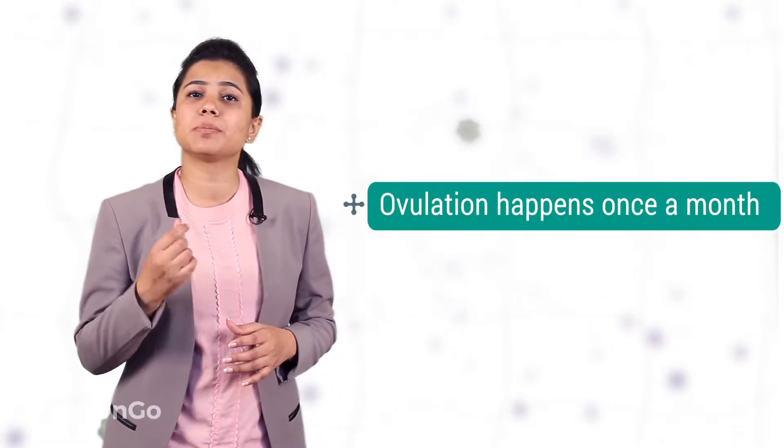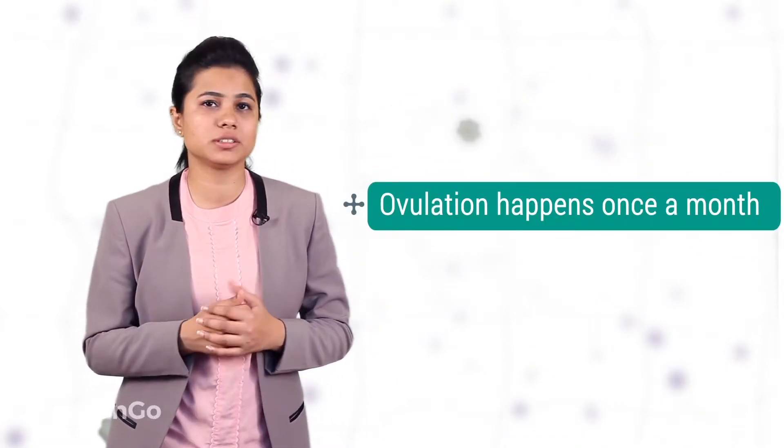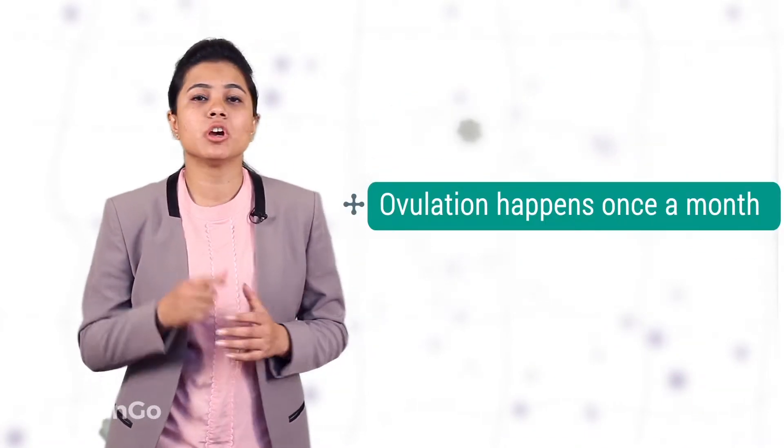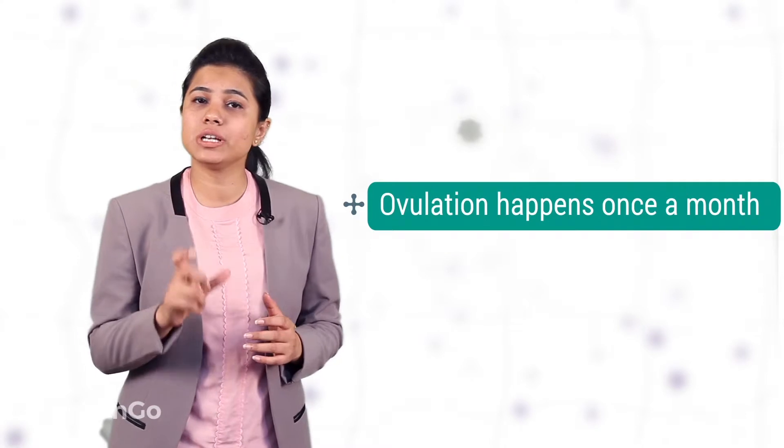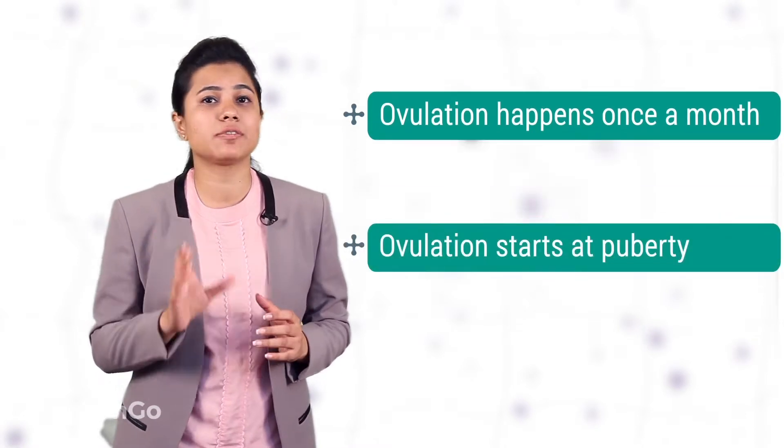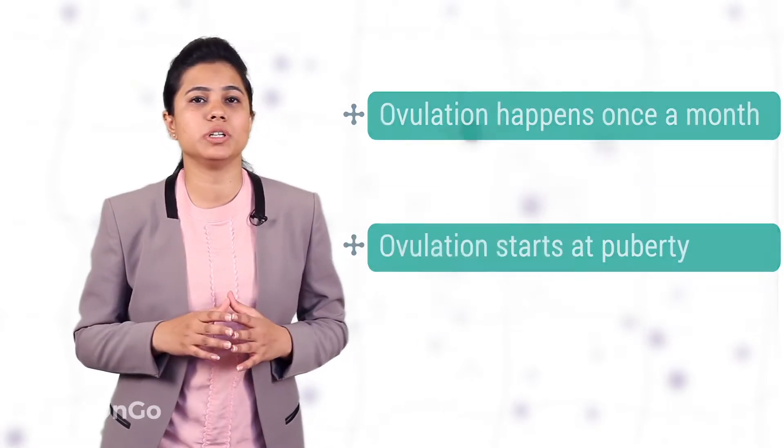In females, ovulation happens approximately once in a month. Ovulation only starts after attaining puberty.